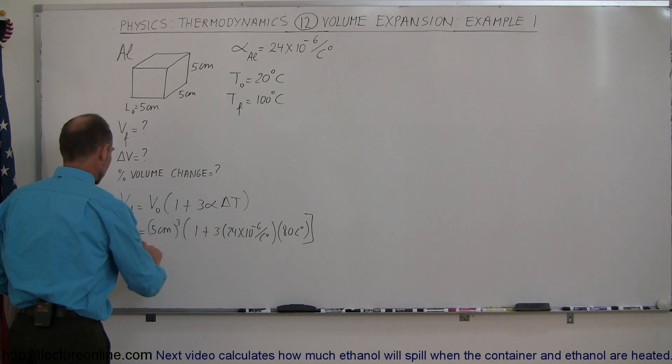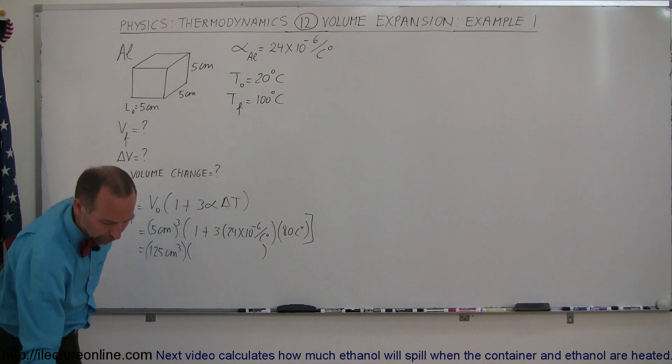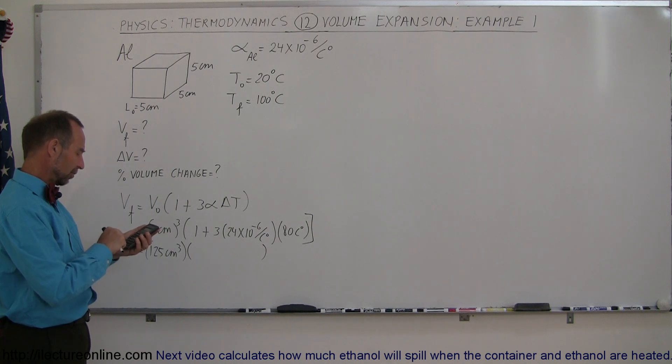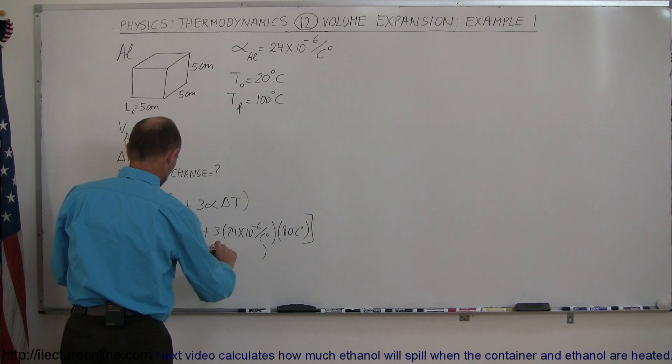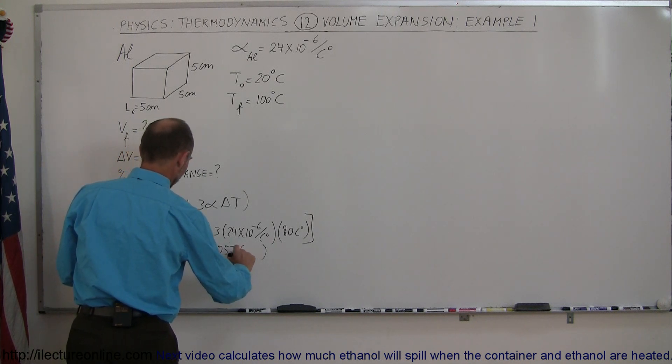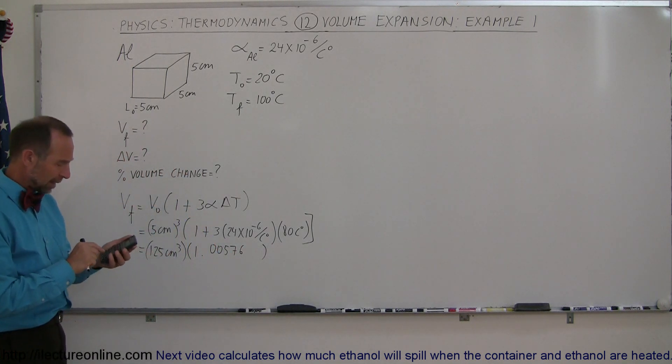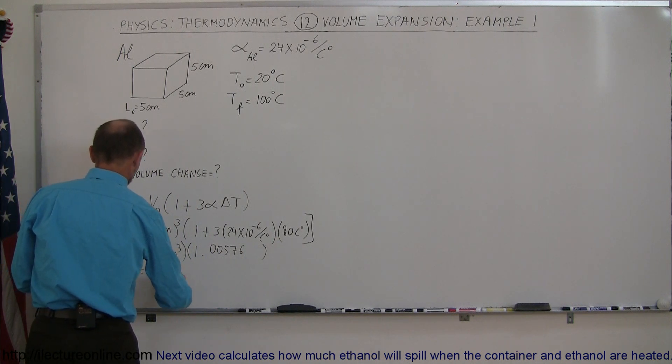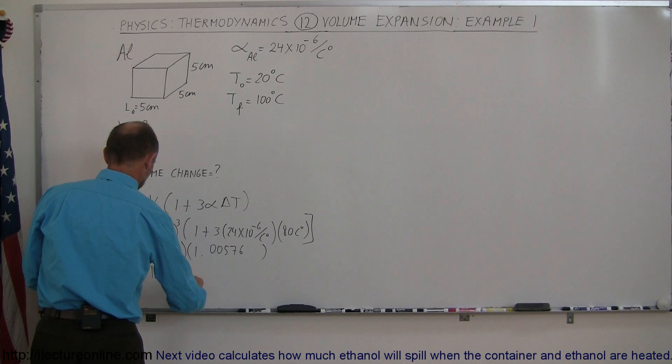All right, let's see what this is equal to. This would be 125 centimeters cubed times this quantity right here. And we'll go ahead and calculate that separately. So we get 24e to the minus 6 times 80 times 3 plus 1 equals 1.00576. And then we'll multiply that times 125 cubic centimeters.